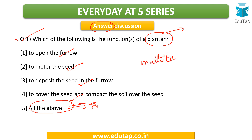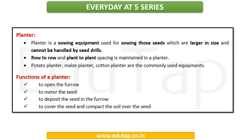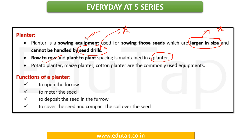A planter saves a lot of time and is accurate. It is a sowing equipment used for sowing seeds which are larger in size — kindly keep this in mind. Smaller seeds are usually handled by seed drills; we will see questions on seed drills in the coming lectures. Using a planter helps maintain row-to-row and plant-to-plant spacing, which relates to the concept of plant geometry in agronomy.